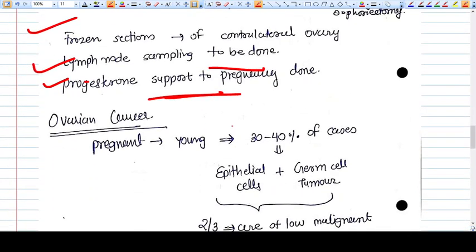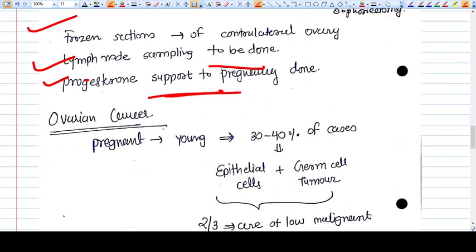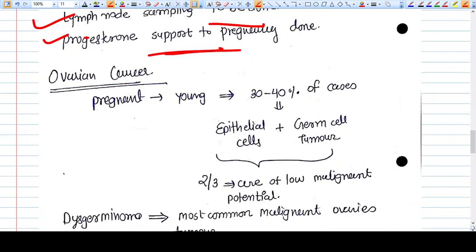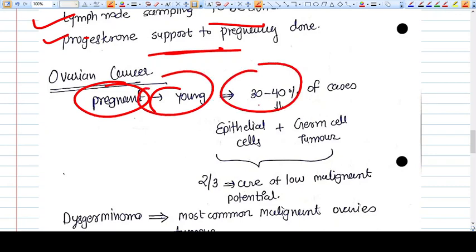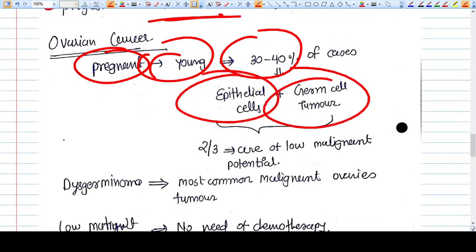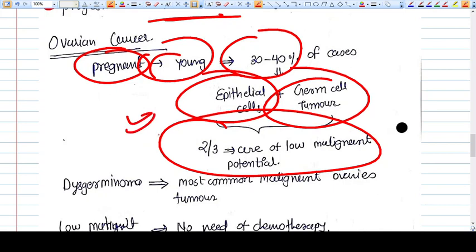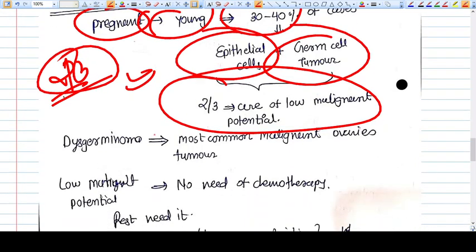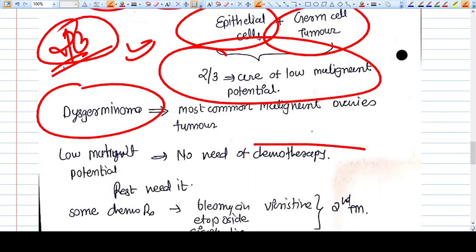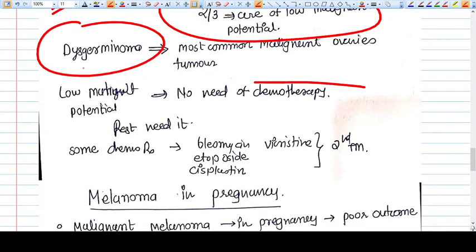Ovarian cancer: generally the pregnant ladies are young. When we consider, 30 to 40 percent of the cases of ovarian cancer are epithelial cells and germ cell tumors. Fortunately, two-thirds of these malignant tumors are having low malignant potential. Dysgerminoma is the most common malignant ovarian tumor. The low malignant potential tumor, you should go for surgery but chemotherapy is not that much required because chemotherapy is very dangerous for the baby.